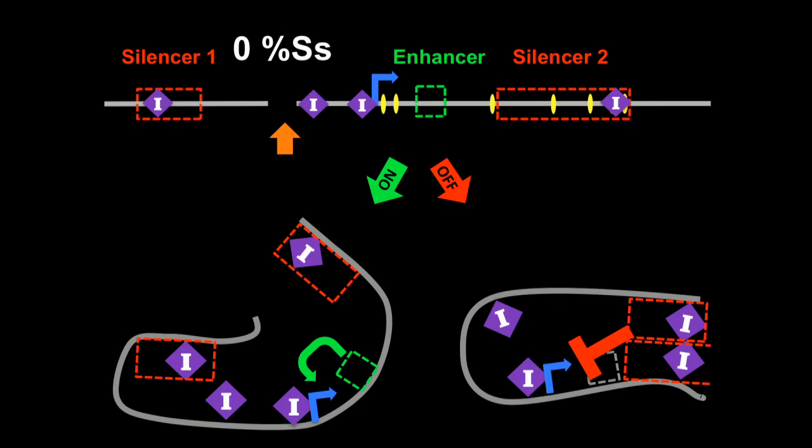We already have some preliminary evidence to suggest that these insulators are important for the spineless decision, as when we delete the second insulator, we get a complete loss of spineless expression. So this is an analysis that we'll be continuing in the future.